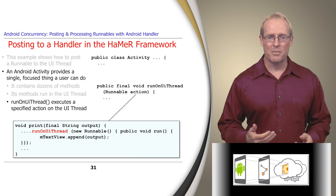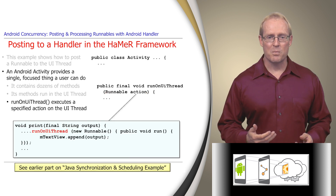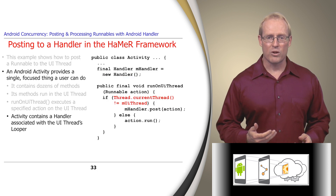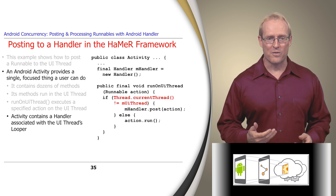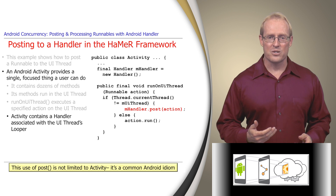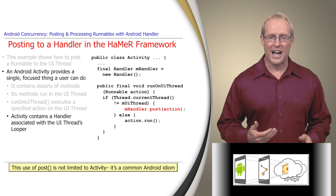As depicted in this code snippet from an earlier video that showed how the strategy pattern can be applied in the ping pong application to print ping and pong strings to the user interface thread. Internally, the runOnUiThread method uses an instance of a handler that's associated with the user interface thread's looper to execute the specified action in the context of the user interface thread. If the thread calling runOnUiThread is the user interface thread itself, the action is run immediately. If it's not the user interface thread, however, the action is posted to the message queue of the user interface thread via the handler. This use of the handler's post method is not limited to the activity class — it's a common Android idiom that will apply throughout this module.